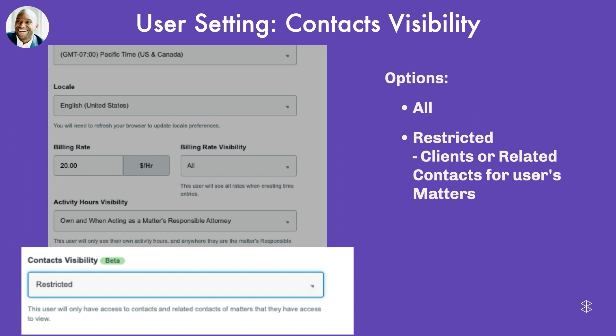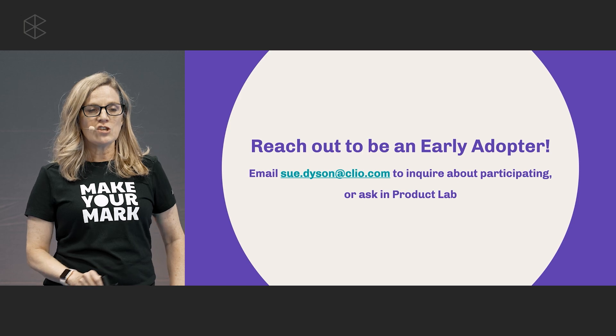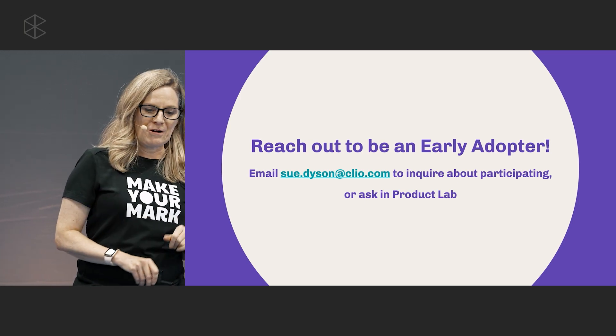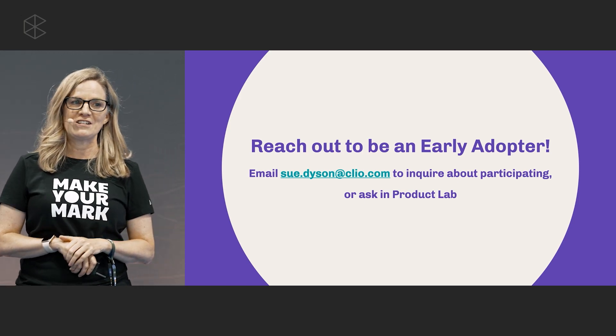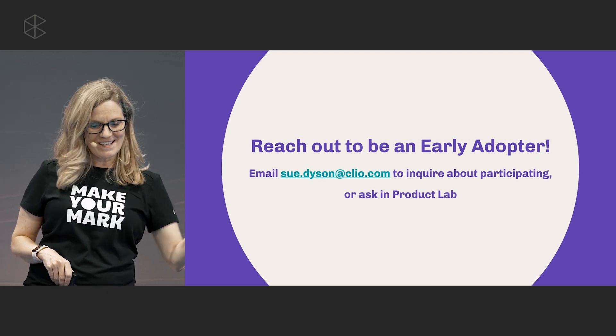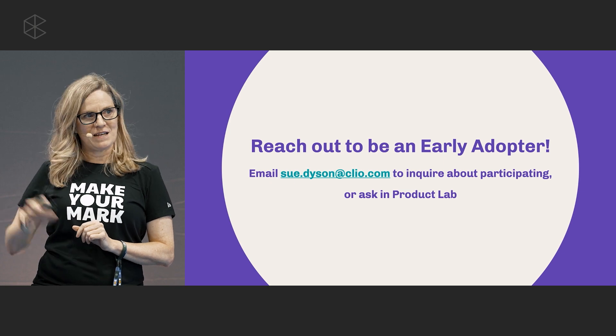When users log in and select contacts, they simply see a subset of clients. This feature is great for contracted employees or interns who have a more restricted scope of work, as access to client info is driven by the matter permissions. This is an imminent pilot project — if you're interested in being an early adopter, please reach out to me. My email address is on screen, or come talk to me at the product lab.